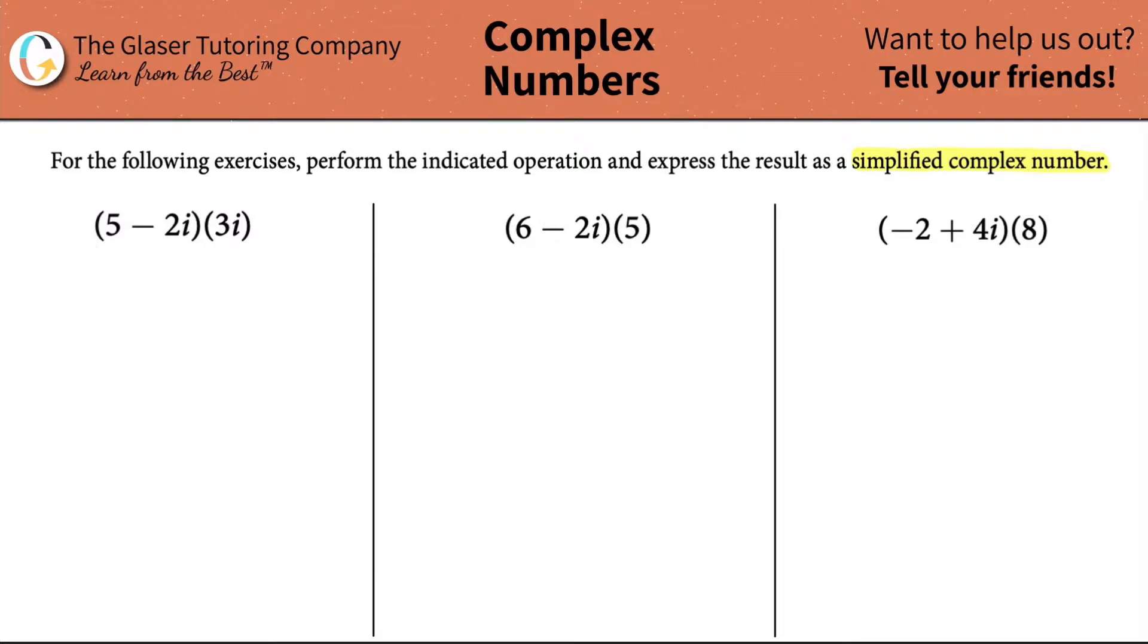We have 5 minus 2i and it's all being multiplied by 3i. So we just need to simplify this. Now remember, when we have two parentheses, in this case we have two parentheses guys, there's the first one, here's the second one, and they're all being multiplied, we have to play fair. That's what I like to call it. We have to just be fair.